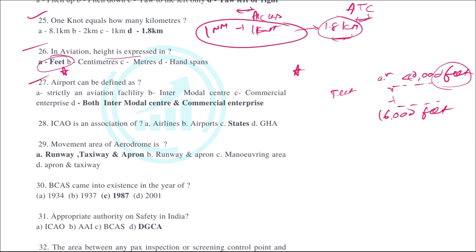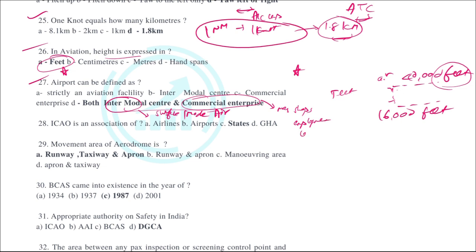An airport can be classified as an intermodal commercial enterprise — both intermodal and commercial enterprise. Intermodal means it connects surface mode to air mode. It is also a commercial enterprise because many shops, businesses, and employment are generated there. Nowadays airports are not merely intermodal centers but also part of commercial enterprise.